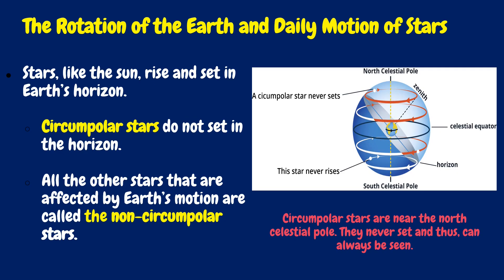Circumpolar stars always reside above the horizon and for that reason never rise or set. All the stars at the Earth's north and south poles are circumpolar. Meanwhile, no star is circumpolar at the equator. All other stars that are affected by Earth's motion are called non-circumpolar stars.